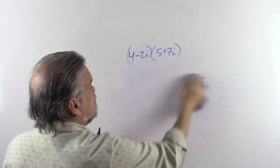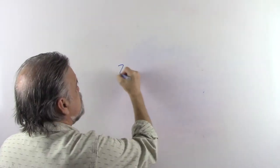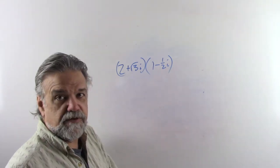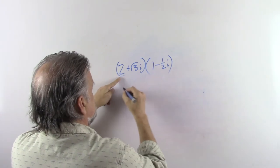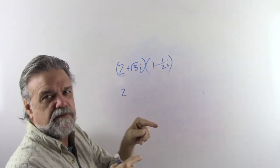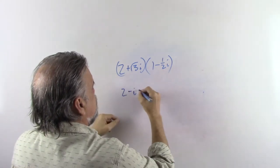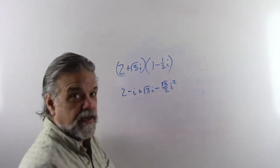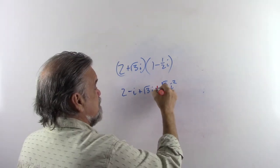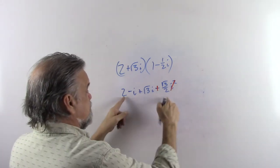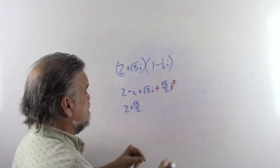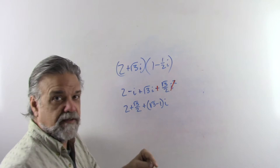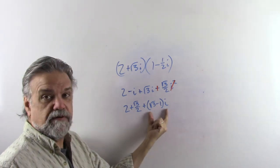Let's multiply a couple more binomials. This time: (2 plus √3·i) times (1 minus ½i). Using FOIL: the first term is 2; the outside is 2 times negative ½, which is negative 1, giving minus i; the inside is √3·i; and the last term is negative √3/2 times i². Since i² equals negative 1, that last term becomes plus √3/2. So the real part is 2 plus √3/2, and the imaginary part is (√3 minus 1)i.